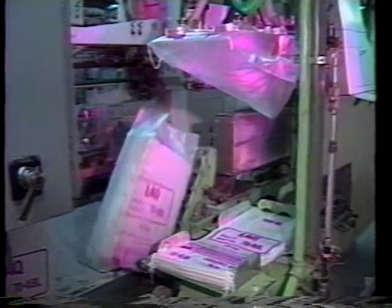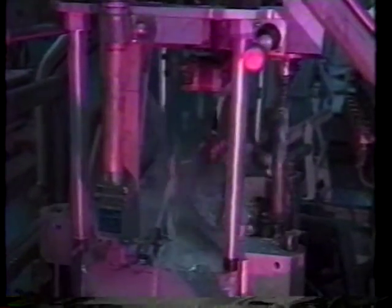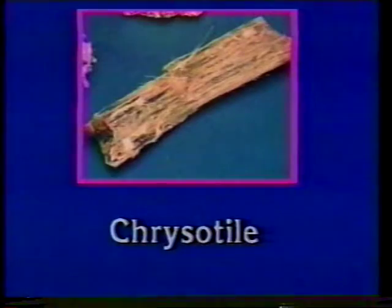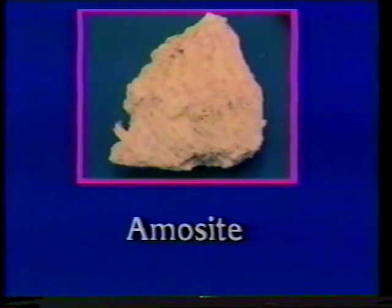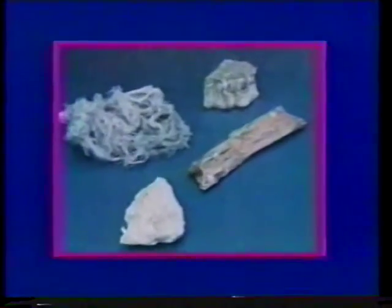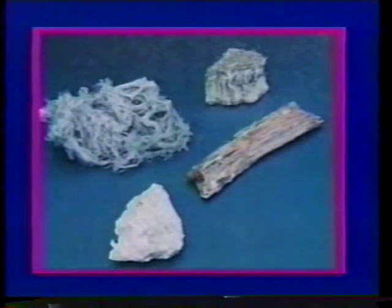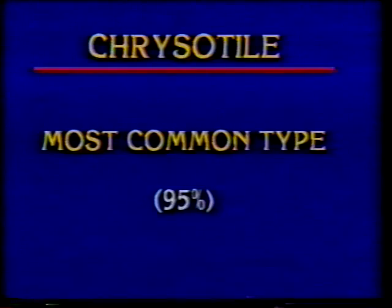The processed asbestos can then be shipped to manufacturers for use in many products with a variety of uses. Asbestos has special properties which make it an ideal material for many applications. The three types of asbestos that are most widely used in building and industrial applications are chrysotile, ammosite, and crocidolite. These types of asbestos fibers may look very different once they are mixed with other materials than they do in their raw form. Chrysotile, the most common type, makes up about 95% of the asbestos used in various products.